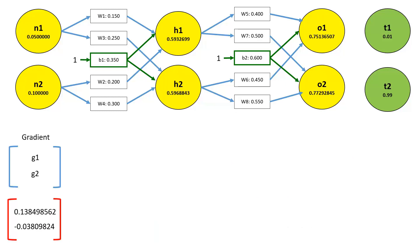So now we can move back to the hidden layer. The gradient calculation for this layer — that is, the amount by which this layer affects the output — needs to take into account the output layer. So we'll take the already calculated gradient from the output layer and use that as our starting point.